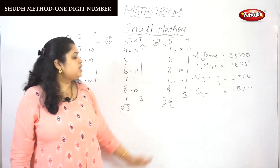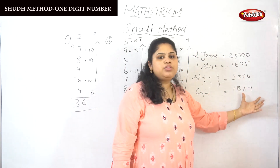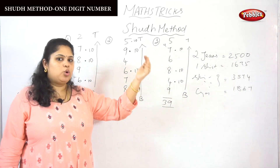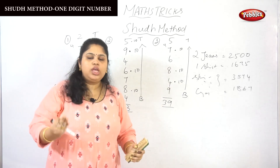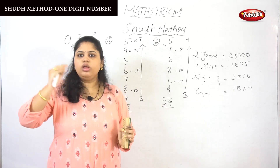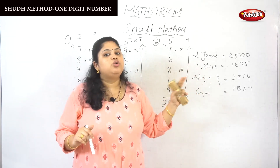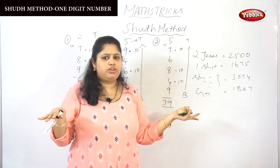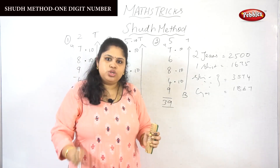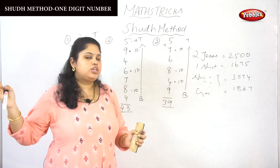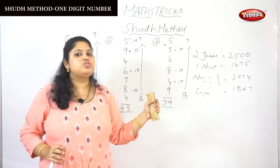You may ask: for one digit it is easy, but you mentioned two jeans at 2500 and a skirt at 1675 — those are four-digit numbers, so how does this work? I will tell you one by one. Next we are going to see two-digit addition, then three-digit, then four-digit. Once you know four digits, six digits or eight digits will be no problem. So next we are going to see two-digit addition using the soothe method.